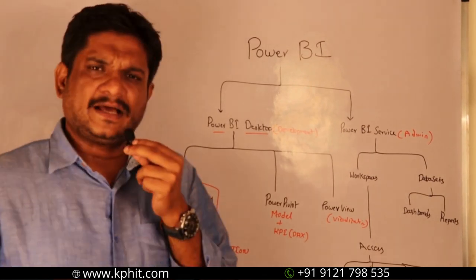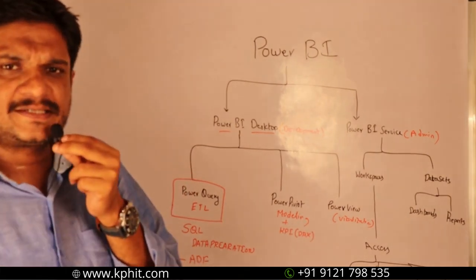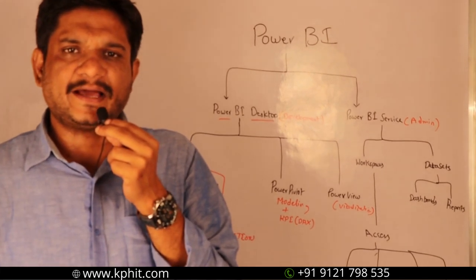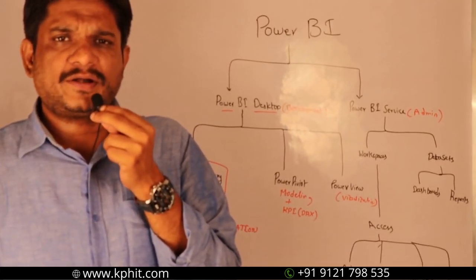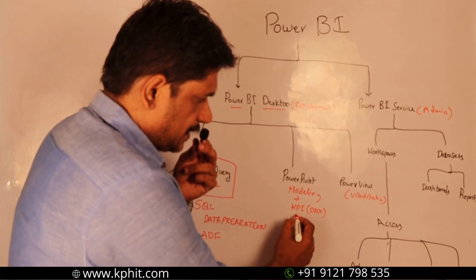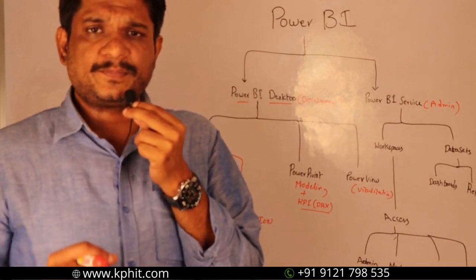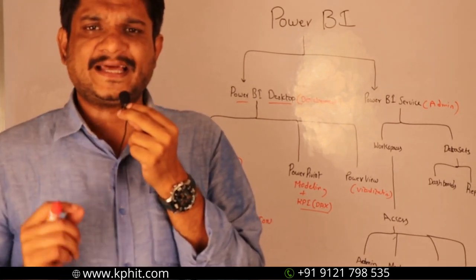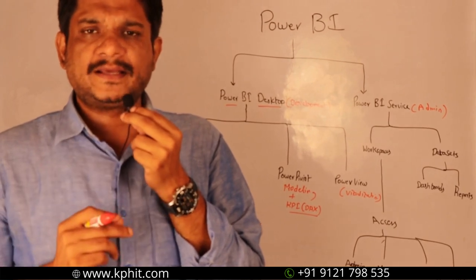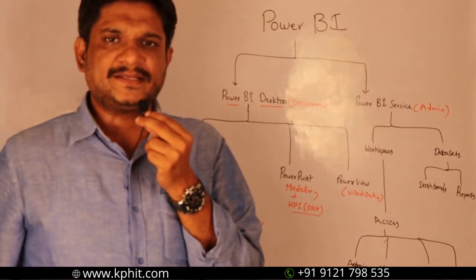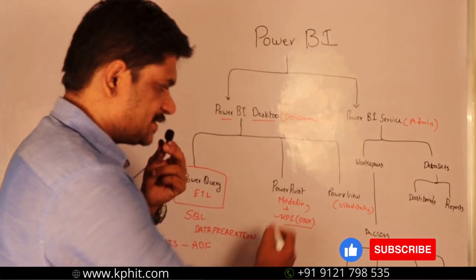The next important concept after Power Query is modeling. If you don't define relationships between tables, you will not get data accuracy. Without data accuracy, you cannot generate KPIs. KPIs are the key metrics that help the client understand business standards — where they stand in the market, which products are profitable, and where they are gaining more sales. Until modeling is perfect, data accuracy is not possible, and without data accuracy, KPIs cannot be generated.